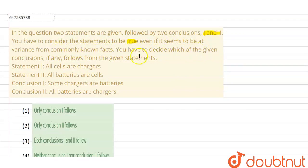You have to decide which of the given conclusion, if any, follows from the given statement. Statement 1: all cells are chargers. Statement 2: all batteries are cells. Conclusion 1: some chargers are batteries. Conclusion 2: all batteries are chargers.